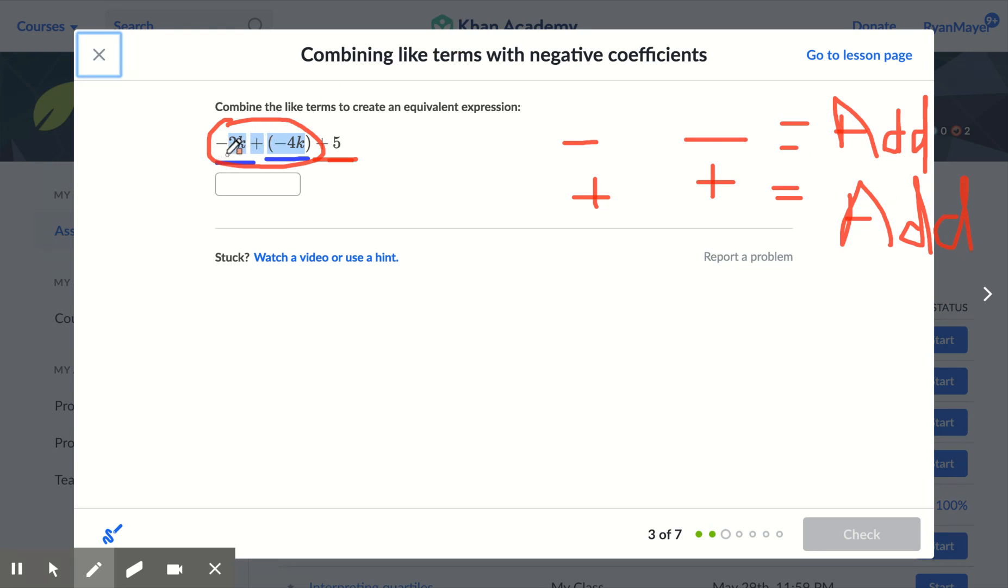So you see I have negative 2k and negative 4k. Same signs, add the numbers. That means I have 6, 6k. But because they're both negative, you keep the sign negative 6k plus 5. That 5 does not get added or subtracted with the k. That 5 is all by himself. It does not have a k next to it. So you just add it or you just attach it. And there we go.